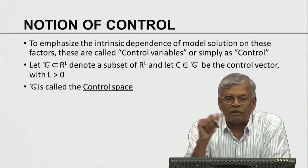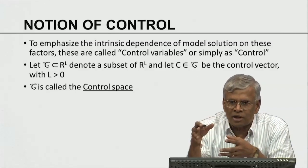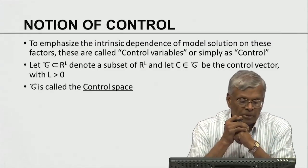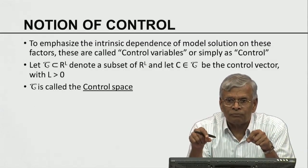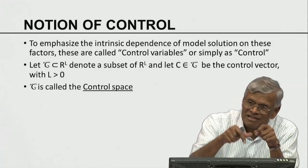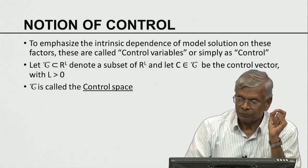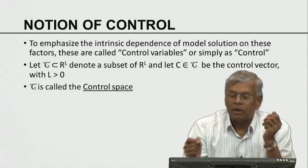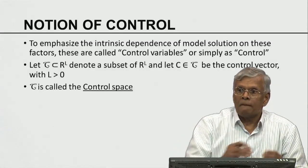To emphasize the intrinsic dependence of model solution on various factors: we have already seen that the model solution depends on the initial condition, parameters, and boundary conditions. The model solutions are contingent on the values we assign to these variables, because these variables control the model solution. In differential equations, the solution depends on initial conditions — if you change the initial condition, the solution changes. Changing the parameters also controls the evolution of the solution. Anything that can change the model solution is called a control variable.